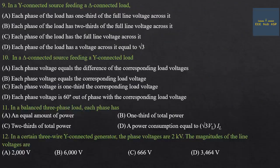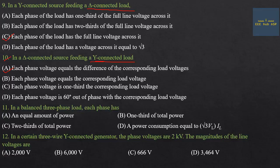For a star-connected source feeding a delta-connected load: in the delta load, phase voltage equals line voltage. Option C: each phase of the load has full line voltage across it. For a delta-connected source feeding a star-connected load: line voltage equals root 3 into phase voltage. Option E: each phase voltage equals the difference of the corresponding line voltages.